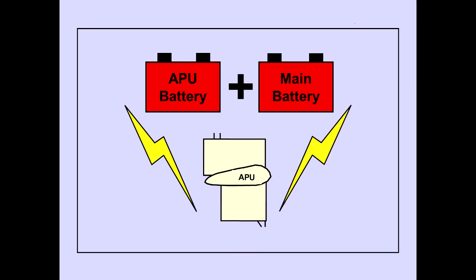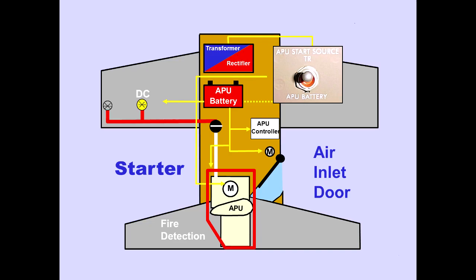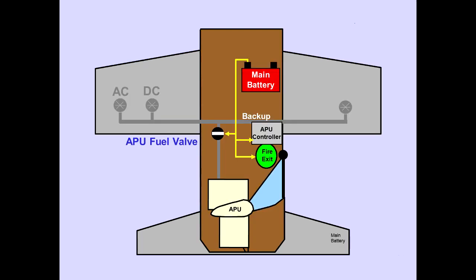Starting and operating the APU requires the APU battery and the main battery. The transformer rectifier powers the APU starter. The APU battery powers the APU and DC fuel pump, the APU controller, the air inlet door, the APU fire detectors, and is the alternate power source for the APU starter motor. The main battery powers the APU fuel valve and the APU fire extinguisher. It is also a backup power source for the APU controller.